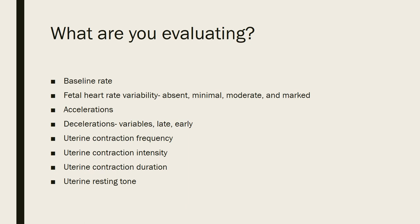We want to know how to determine a fetal baseline heart rate and determine what type of periodic or episodic changes the baby's heart rate is having. We want to first determine what type of variability they have — that beat-to-beat change or fluctuation in the fetal heart rate. Then accelerations, which are a positive reassuring sign, and then any decelerations — there are three typical types: variables, earlies, or lates. We'll also look at uterine frequency, intensity, duration, and resting tone of contractions.